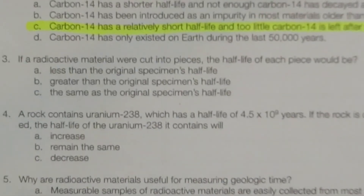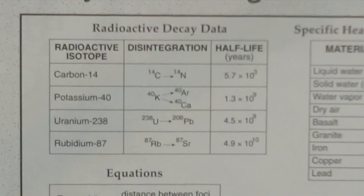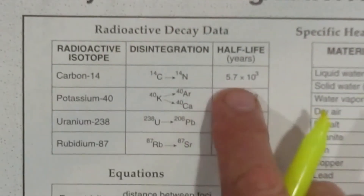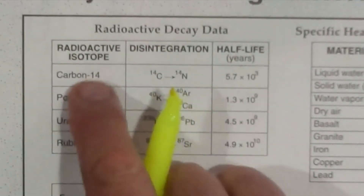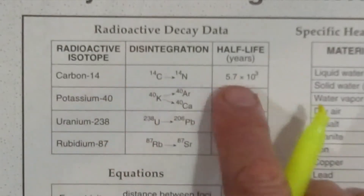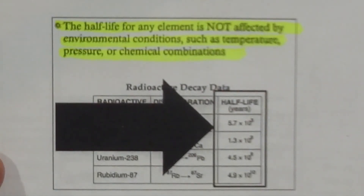Number three: if the radioactive material were cut into pieces, the half-life of each piece would be the same. The half-life of a radioactive substance is not determined by the amount of material, just the material itself. So carbon-14 always has a half-life of 5,700 years — it doesn't matter what size it is. Your PowerPoint notes point out that the half-life for any element is not affected by environmental conditions such as temperature, pressure, or chemical combinations, and we could even add the amount of material you actually have.